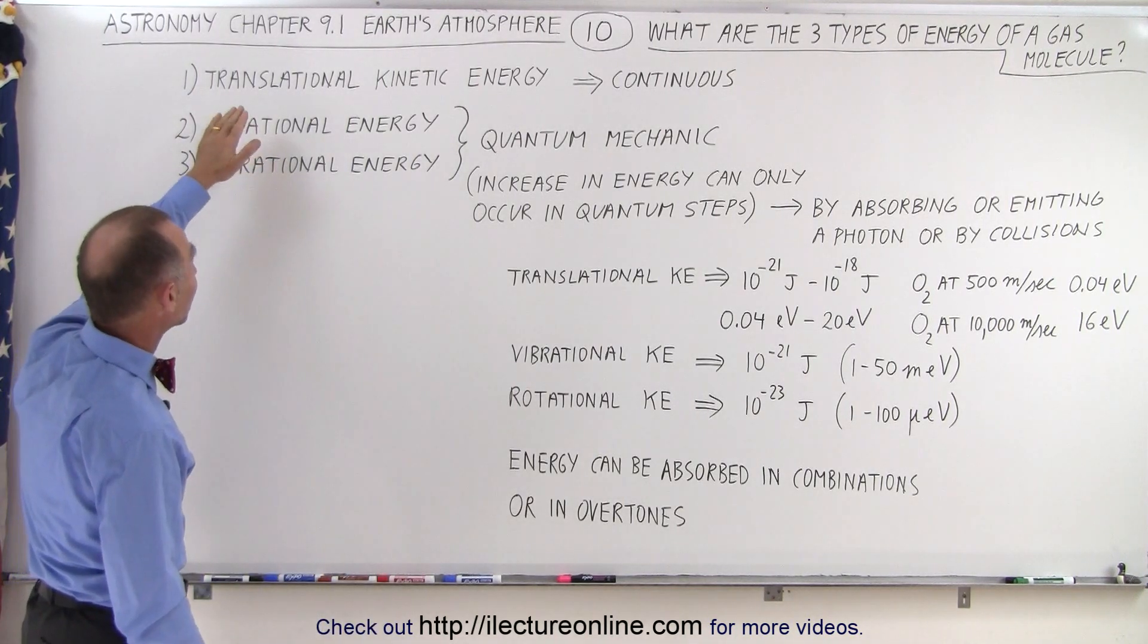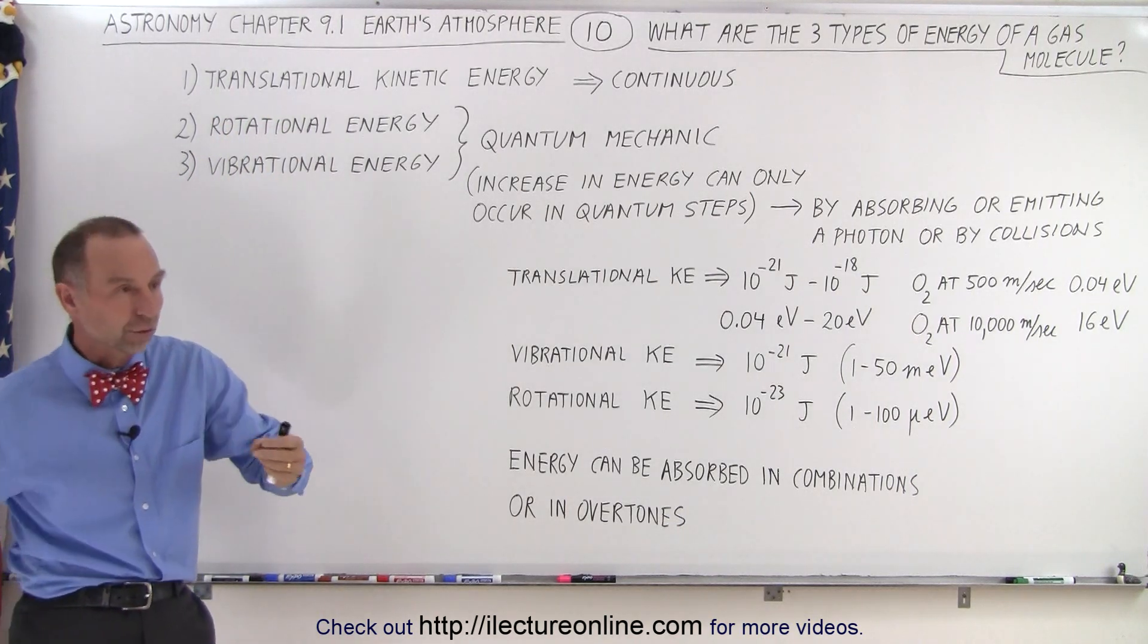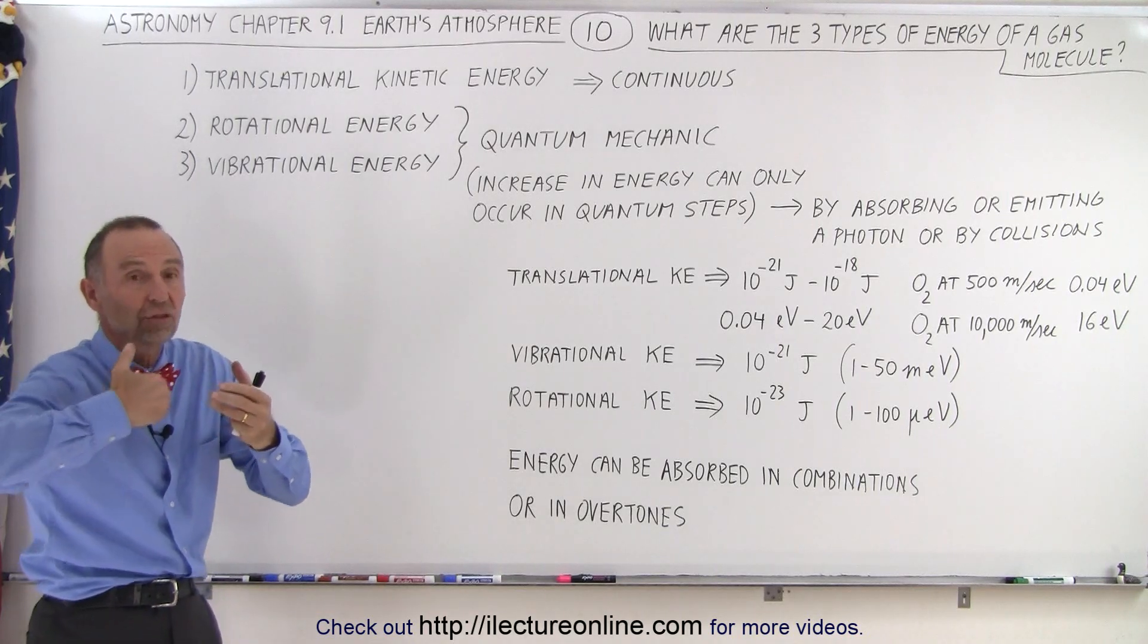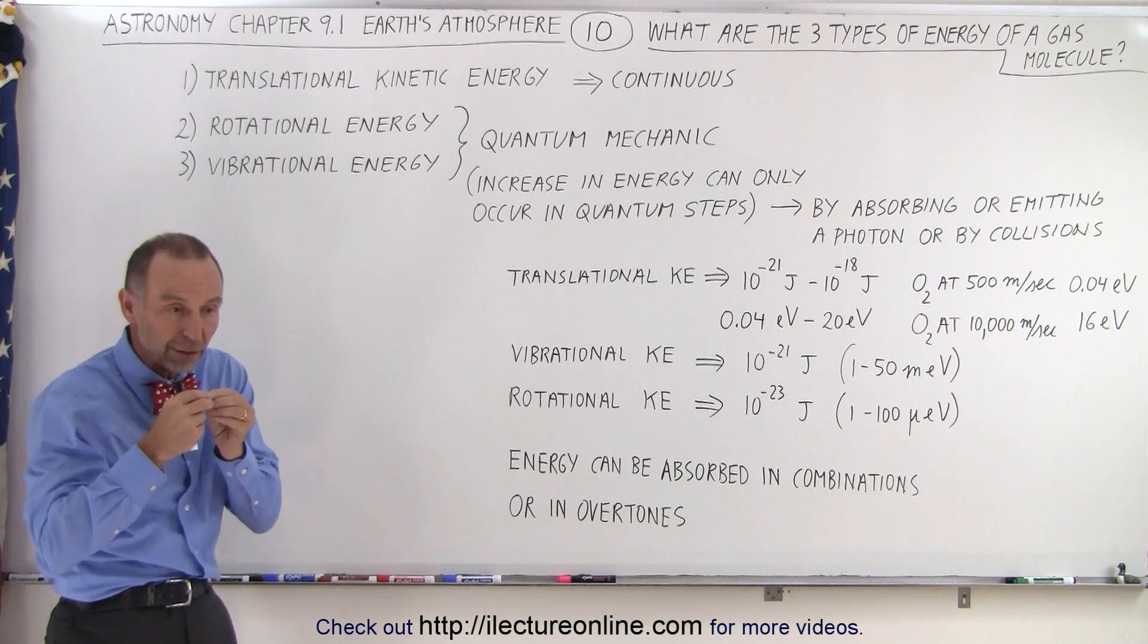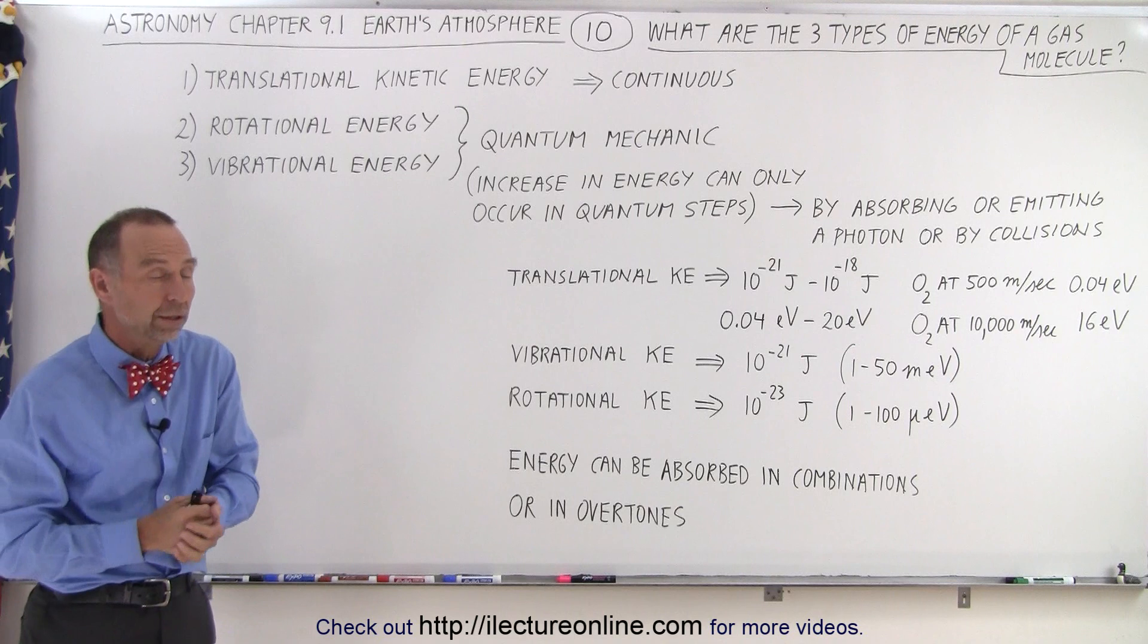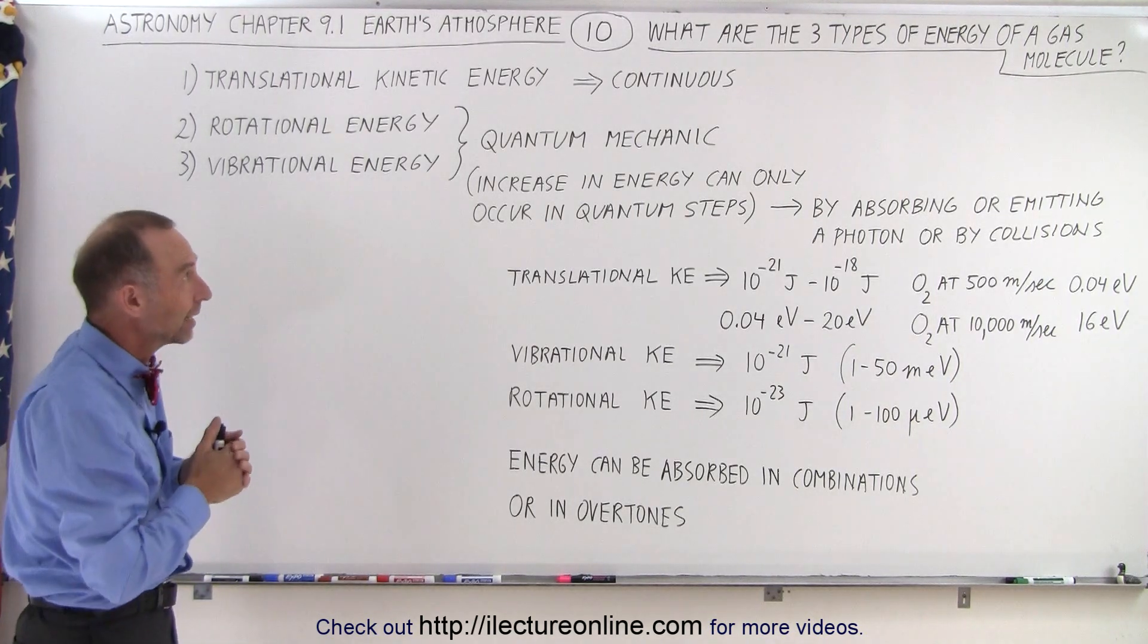The first way is what we call translational kinetic energy, just like if you hit a tennis ball that goes flying through the air. That tennis ball will have kinetic energy simply because it's moving along a path. Same with molecules - since they're simply moving at some velocity, the kinetic energy can be one-half mv squared or three-halves kT depending upon which way you want to calculate it.